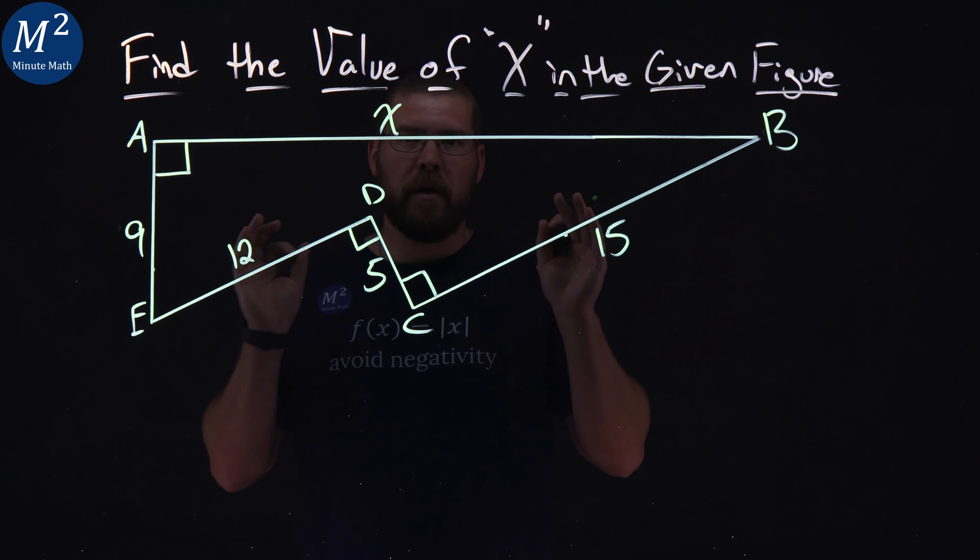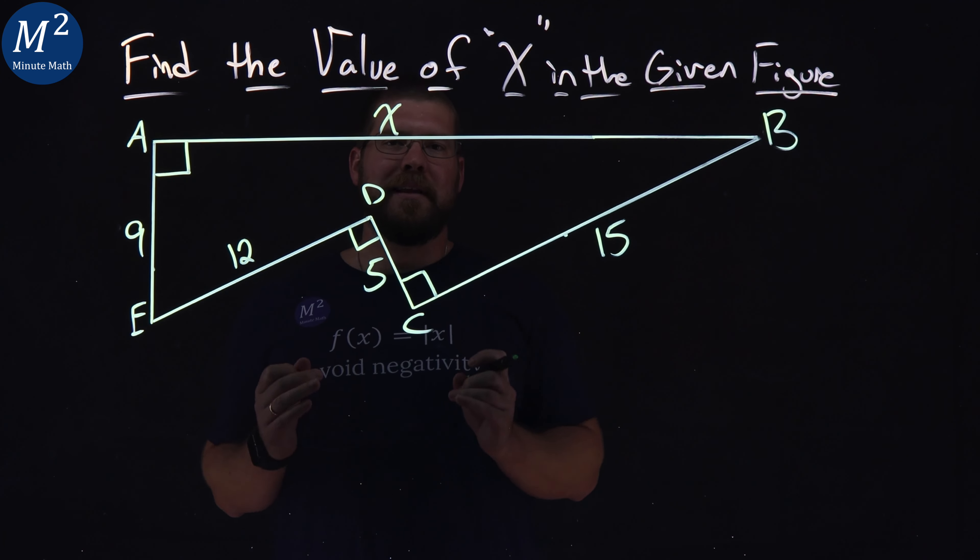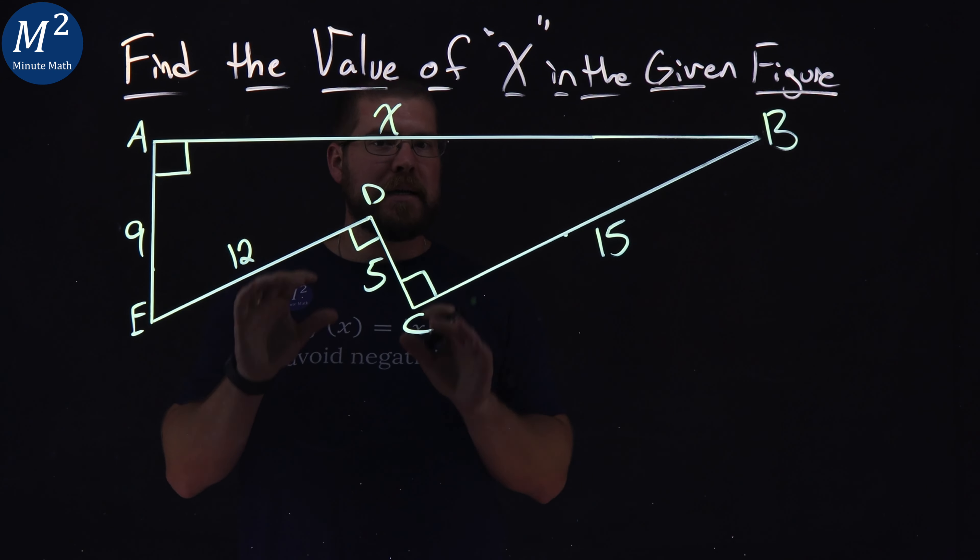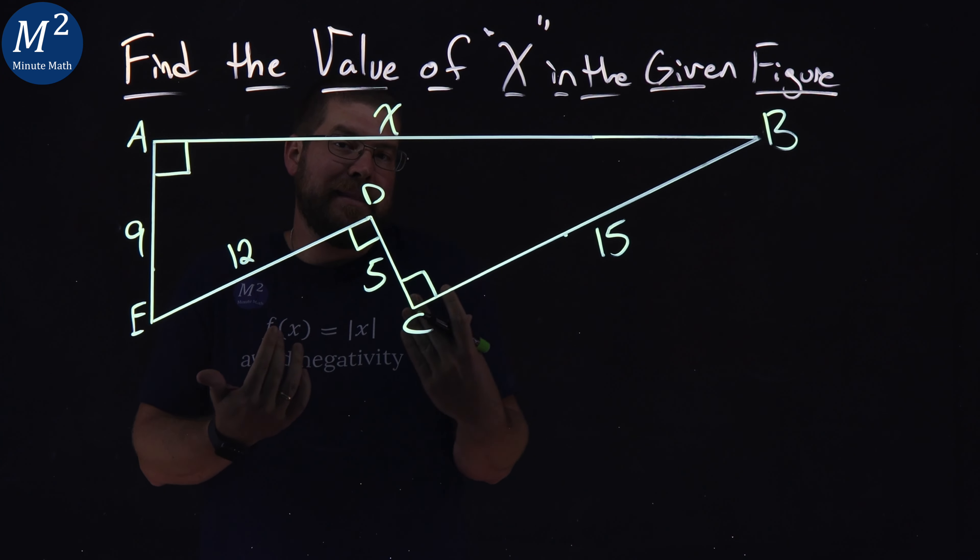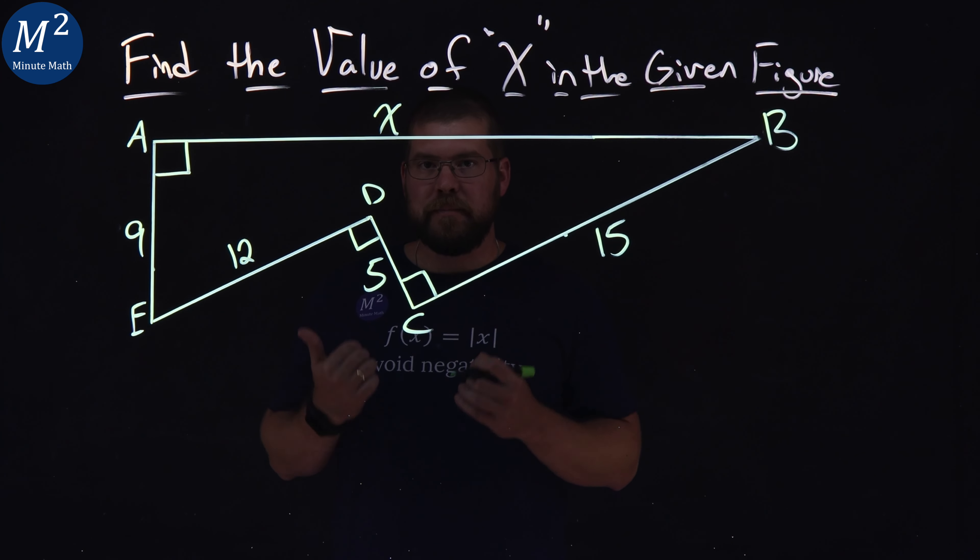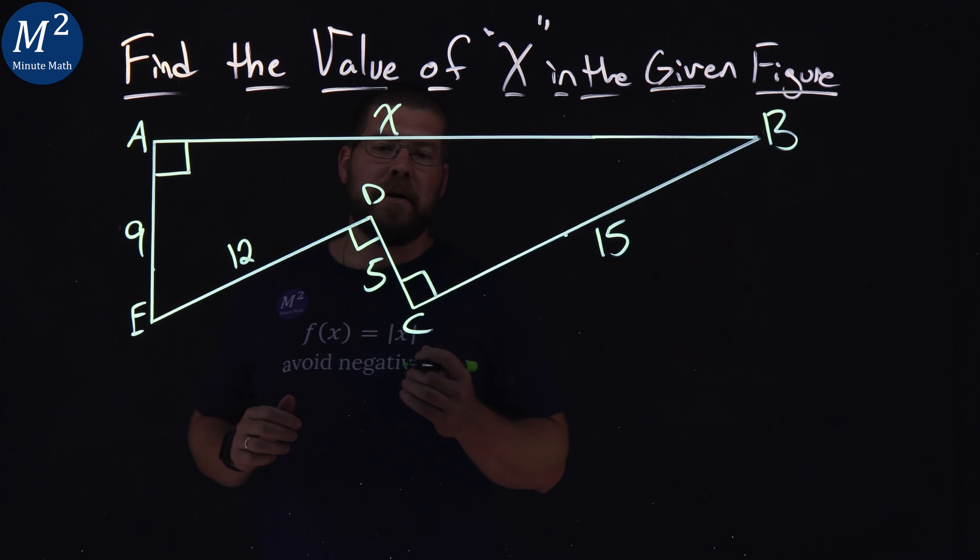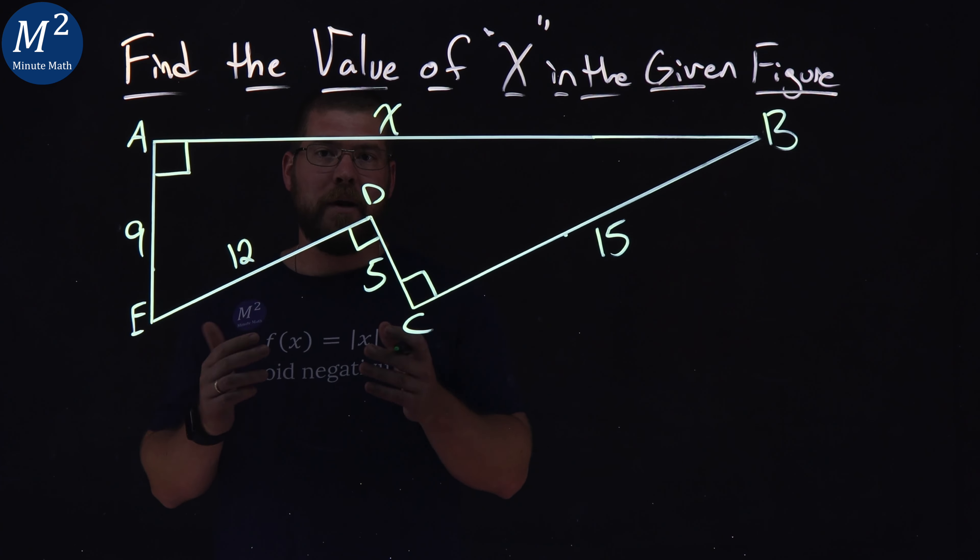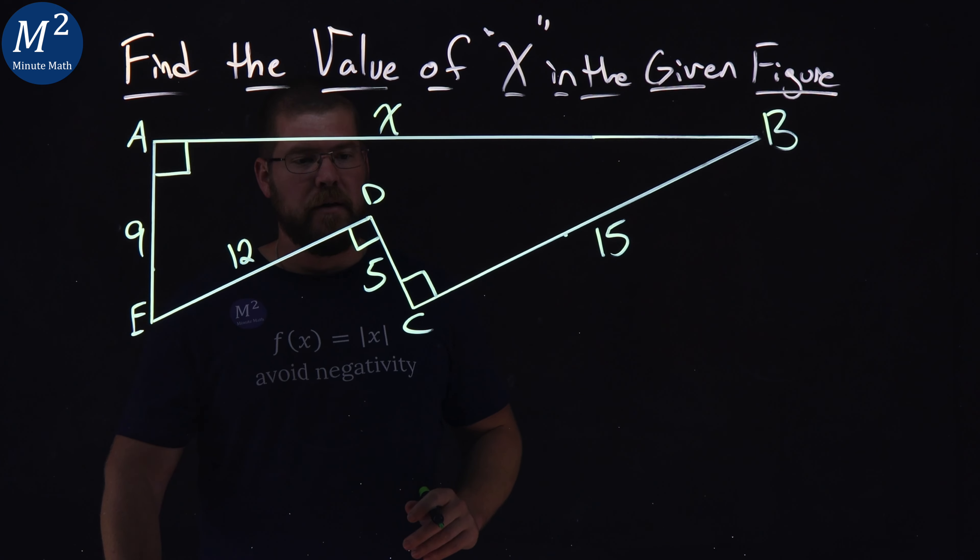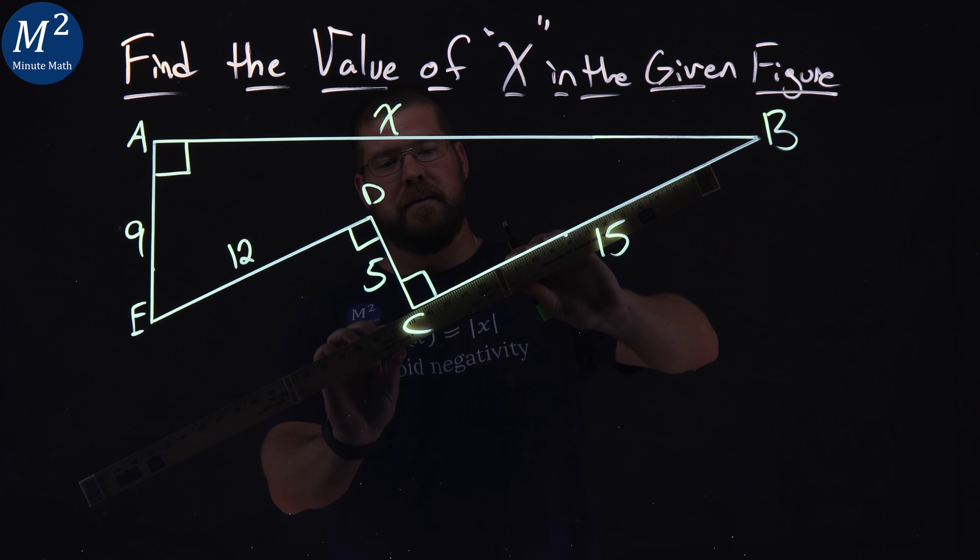Most geometry students don't realize that they can add lines to their figure. You don't just think in a little box of what's given, you can create things that are true within the problem that can help you out. So what we're going to do is create a rectangle. I'm going to extend line CB and continue down that line.